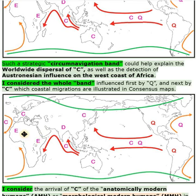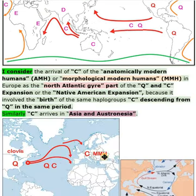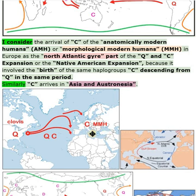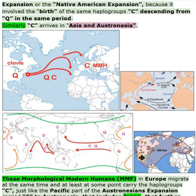I consider the arrival of haplogroup C of the anatomically modern humans (AMH), or morphological modern humans (MMH), in Europe as the North Atlantic gyre part of the Q and C expansion — or the Native American expansion — because it involved the birth of the same haplogroup C descending from Q in the same period.